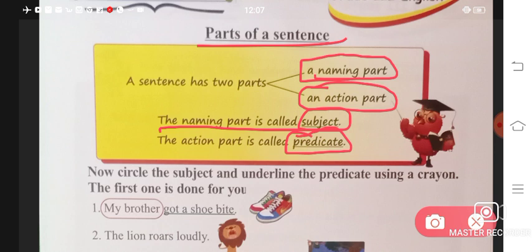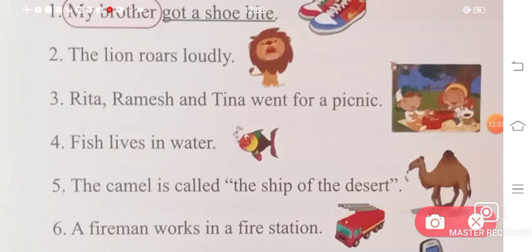Like 'My brother got a shoe bite.' What are we talking about? My brother. So my brother is your subject. And 'got a shoe bite' will be your predicate. Next number two: 'The lion roars loudly.' We're talking about the lion. What are we saying? Roars loudly. So the lion is your subject and roars loudly is your predicate.